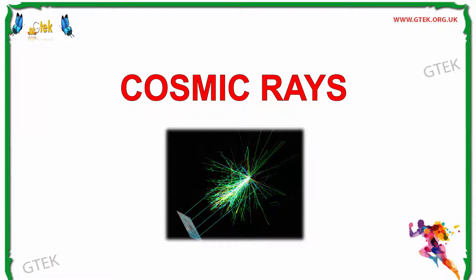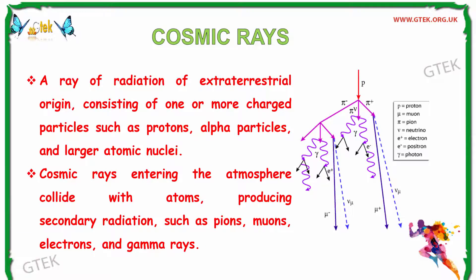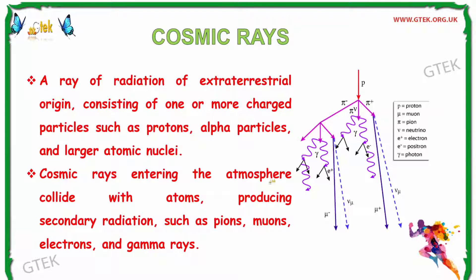Welcome to GTech. Today we are going to see about Cosmic Rays. What is Cosmic Rays? A ray of radiation of extraterrestrial origin consisting of one or more charged particles such as photons, alpha particles and larger atomic nuclei. Cosmic Rays entering the atmosphere collide with atoms producing secondary radiation such as pions,